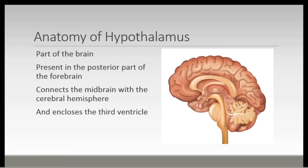To start with the anatomy of the hypothalamus: it is part of the brain and is present in the posterior part of the forebrain. It connects the midbrain with the cerebral hemisphere and encloses the third ventricle.